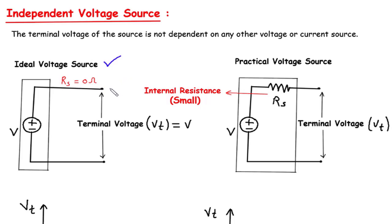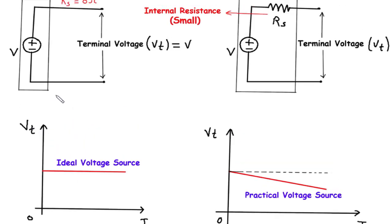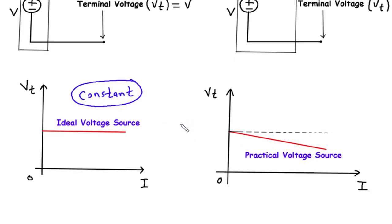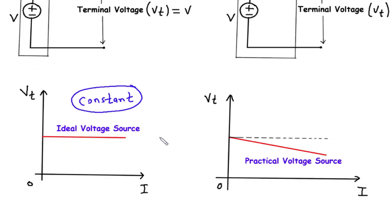In the characteristics graph of an ideal voltage source, we plot the current (I) along the x-axis and the terminal voltage (Vt) along the y-axis. Since the internal resistance is zero, the terminal voltage remains constant regardless of the current flowing through the source. This means that no matter how much current is drawn from the ideal voltage source, the voltage across its terminals remains exactly the same. Visually, the characteristics graph of an ideal voltage source appears as a perfectly vertical line, indicating that the terminal voltage Vt is constant and unaffected by the current. It implies that the ideal voltage source can provide an infinite amount of current while maintaining a steady voltage.